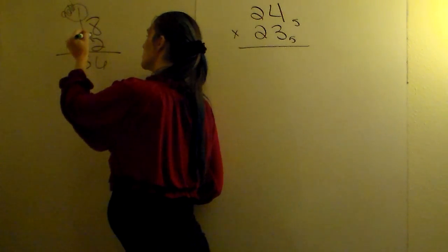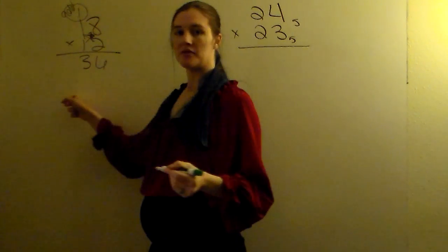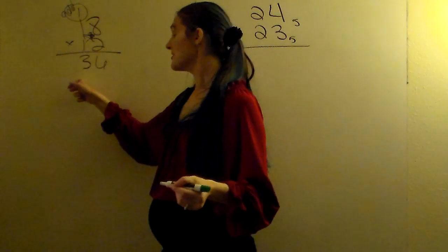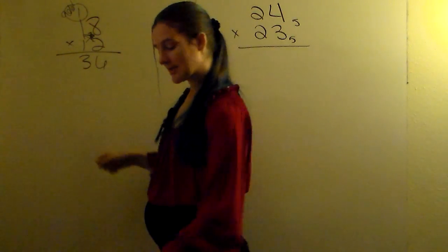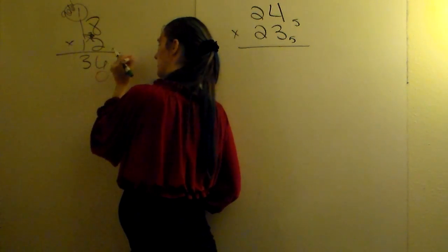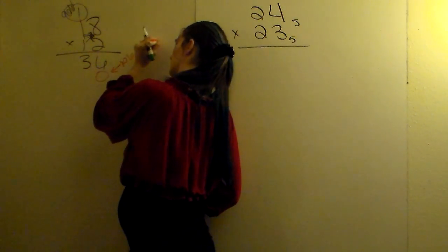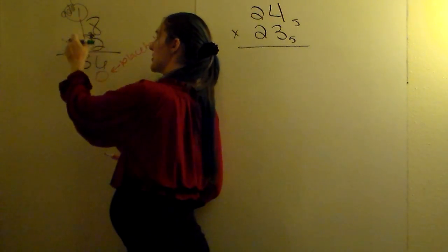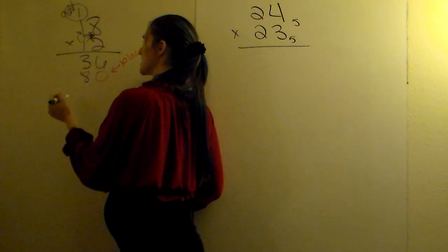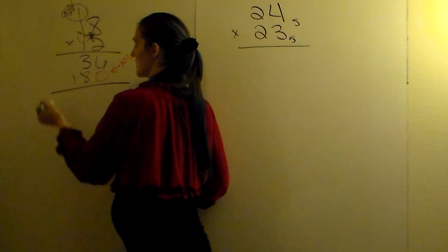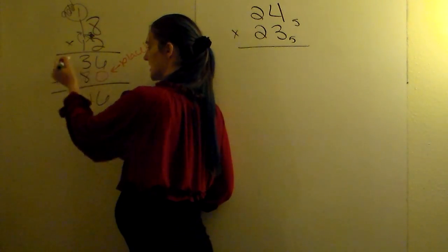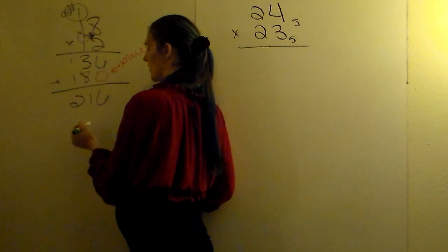Then before I do 1 times 8, I've got to move it over 1. 1 is in the tens place, so I've got to start my answer in the tens place. I'm going to put this 0 placeholder. And then I can do my multiplication. 1 times 8, and 1 times 1. At the very end, I'm going to add 6 plus 0, 3 plus 8, carry my 1, and 1 plus 1.